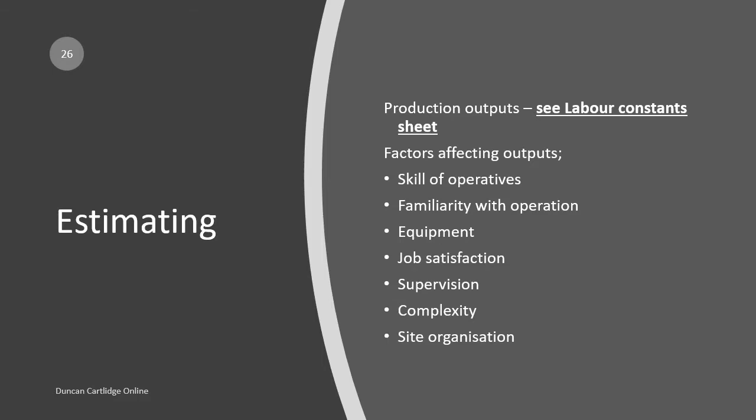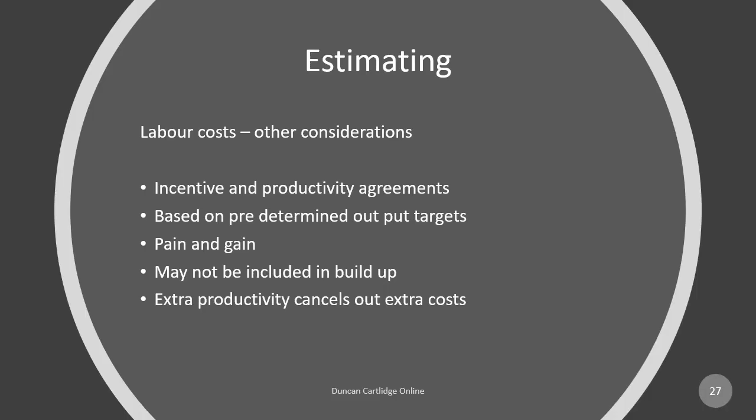When using historical labour costs, the following factors should be taken into account, as they will impact on output levels. As mentioned earlier, the skill of the operatives and the quality of the supervision has a big impact on output, as does the general organisation of the site. Incentive or bonus schemes can be used to increase output, although care should be taken to ensure that any increases in output are not offset by incentive payments.